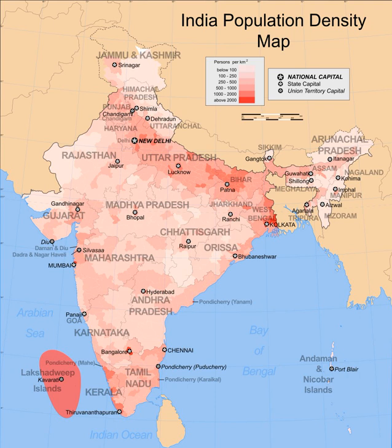Nizamuddin Ahmad reported that under Akbar's reign, Mughal India had 120 large cities and 3,200 townships. A number of cities in India had a population between a quarter million and half million people, with larger cities including Agra with up to 800,000 people and Dhaka in Bengal Subha with over 1 million people. Mughal India also had a large number of villages — 455,698 villages by the time of Aurangzeb.